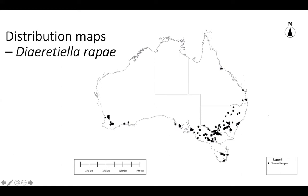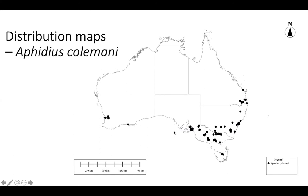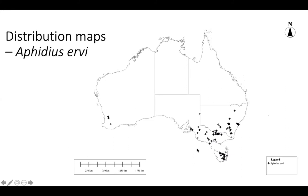Moving to the next most commonly catalogued wasp, Aphidius colemani does not extend as far north as Diaeretiella rapae and is not found on the western side of the Spencer Gulf, though it is found in low numbers in Tasmania. Aphidius ervi, the third most commonly catalogued species, has far more records from Tasmania but no records from Queensland, stopping quite far south — possibly because it cannot reproduce at the same rate as other species at warmer temperatures, being more adapted to the cooler southern regions.